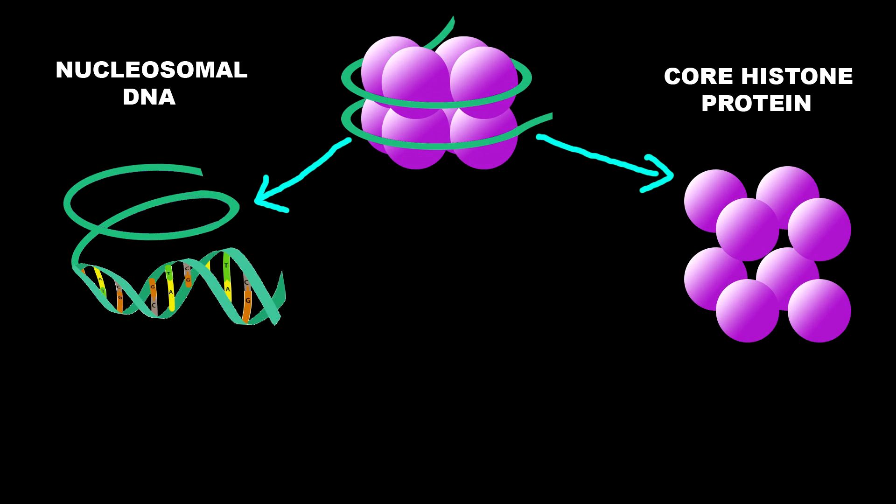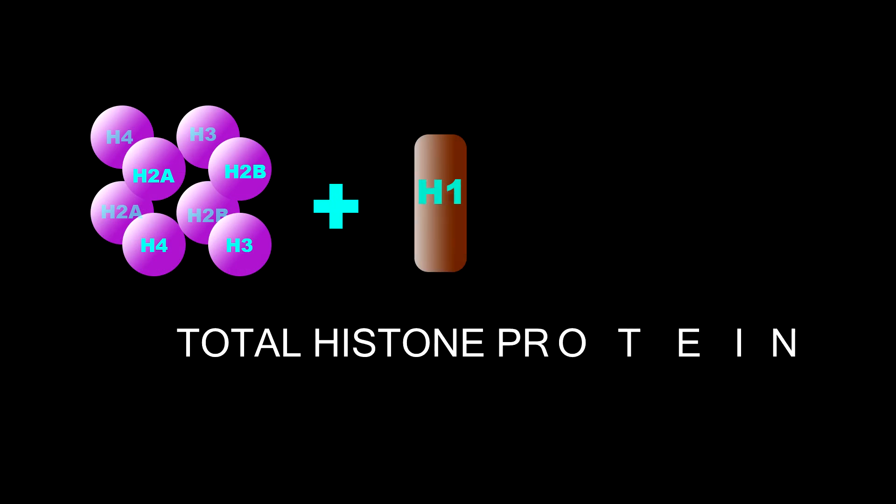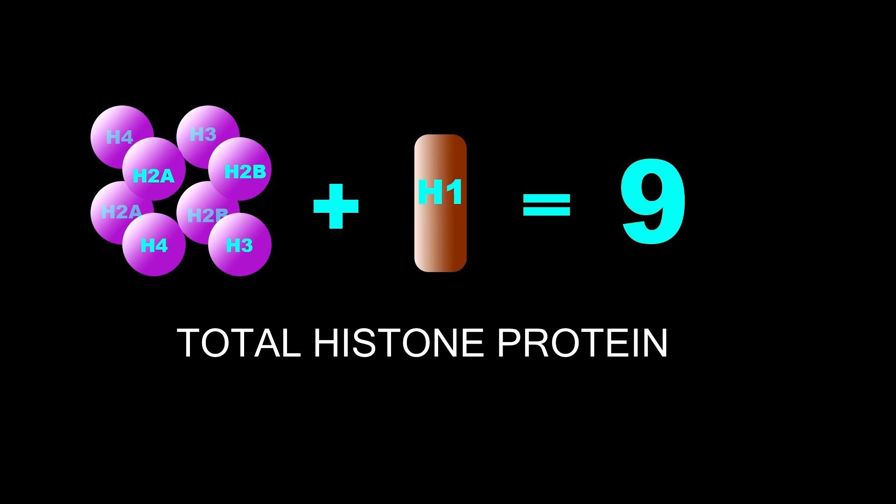The core histone protein consists of four types: H2A, H2B, H3, and H4. The total number of histone proteins is eight, and in chromatin, the total number is nine with the added H1 protein. So the total number of nitrogen bases in chromatin is 200.